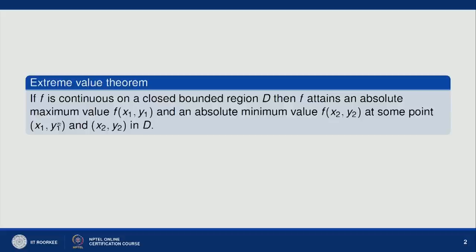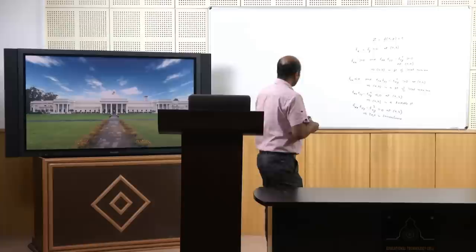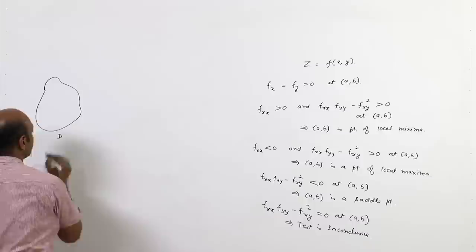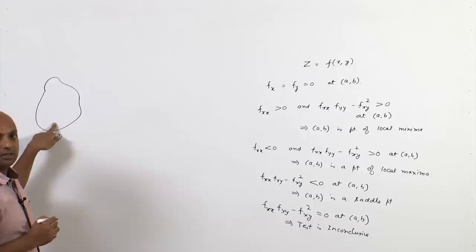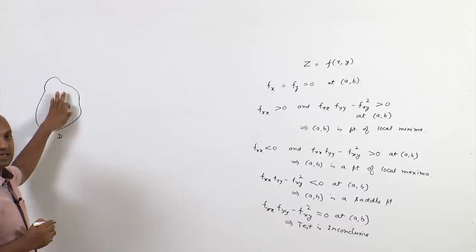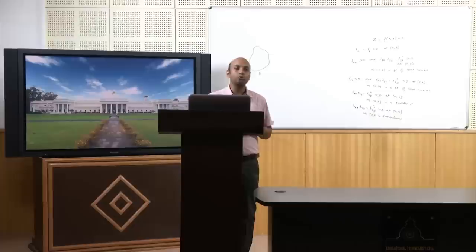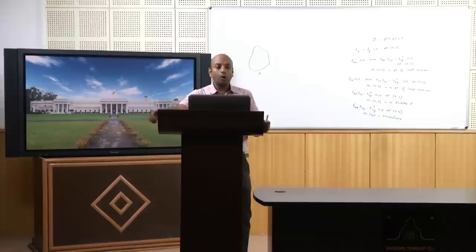First we have the Extreme Value Theorem, which states: if f is a continuous function on a closed and bounded region D, then f always attains an absolute maximum value f(x₁,y₁) and an absolute minimum value f(x₂,y₂) at some points (x₁,y₁) and (x₂,y₂) in D. That means there always exist such points in a closed and bounded region.